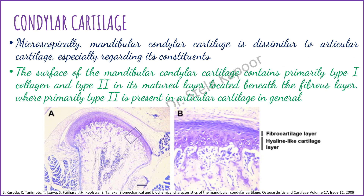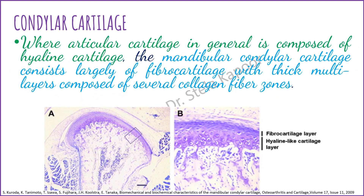Although functionally similar, microscopically the mandibular cartilage is dissimilar to articular cartilage, especially regarding its constituents. The surface of the mandibular cartilage contains primarily type 1 collagen, while type 2 collagen is present in the matured layer beneath the fibrous layer. In contrast, articular cartilage in general is primarily composed of type 2 collagen.